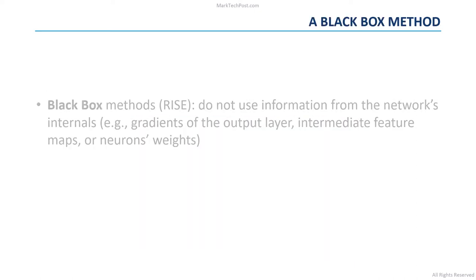RISE is a black box method. This means it can be applied to any off-the-shelf neural network used for image classification, since RISE doesn't assume any access to the internals of the neural network. This means it doesn't use the gradients of the output layer, intermediate feature maps, or the weights of the neurons.